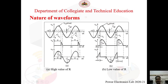Looking at the waveform across the thyristor: from the start of the positive half cycle to the firing instant, the SCR is in the off position, so the entire supply voltage appears across the SCR. Once the SCR fires, the voltage across it drops to nearly zero. In the negative half cycle, the SCR turns off by natural commutation and the whole supply voltage again appears across the SCR.